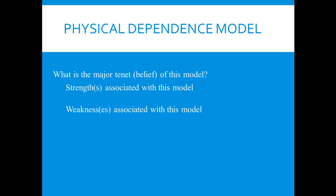The weaknesses of the physical dependence model: first, it offers no explanation for why people continue taking drugs that only have psychological withdrawal symptoms. Second, it does not explain why some people are able to discontinue using drugs while others aren't. If withdrawal symptoms are the motivation for continued use, then either everybody would continue taking them, or everyone would be able to stop if the symptoms weren't so bad.